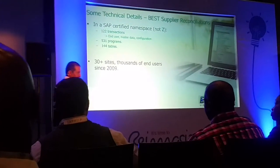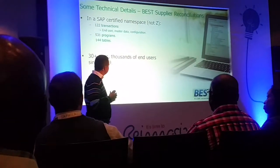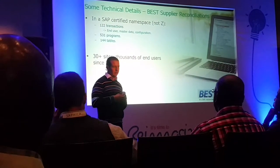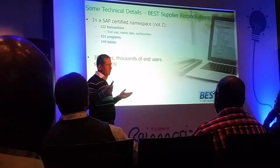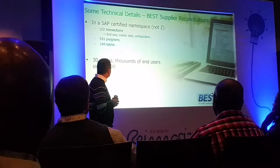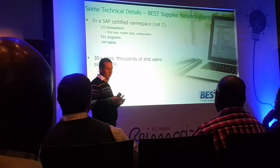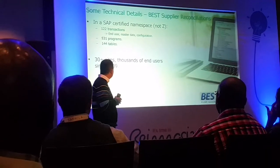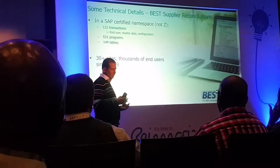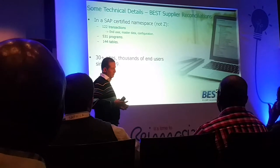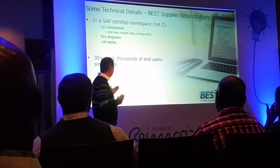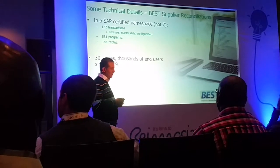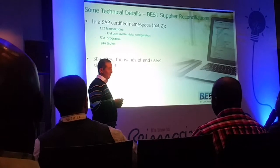So that's what the software does. Technically, what's behind it? It's in a SAP-certified namespace — ours is BST1, so it's not a Z. There are 122 transactions made up of end-user transactions, master data, and configuration data; 531 programs; 144 tables. That was the size of the development we had to convert to S4HANA. And we've got about 30-plus sites with thousands of end-users, so we have to do it right because we're going to need to deploy it to them soon.